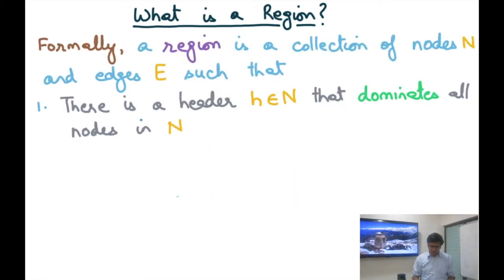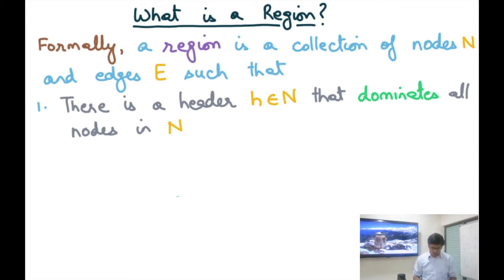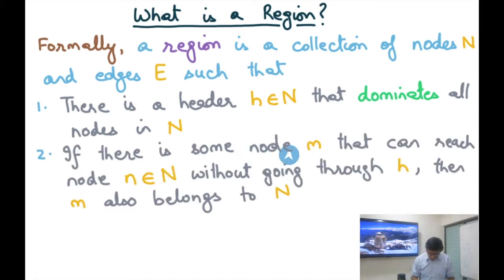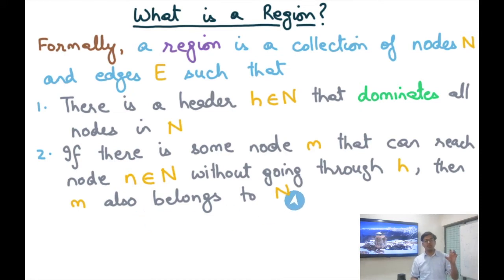More formally, a region is a collection of nodes N and edges E such that these nodes and edges must be a subset of the nodes and edges of the entire control flow graph. There must be a header h belonging to the set of nodes N that dominates all nodes in N — this encodes our single entry condition. Second, if there is some node m that can reach a node n belonging to N without going through h, then m also belongs to N.